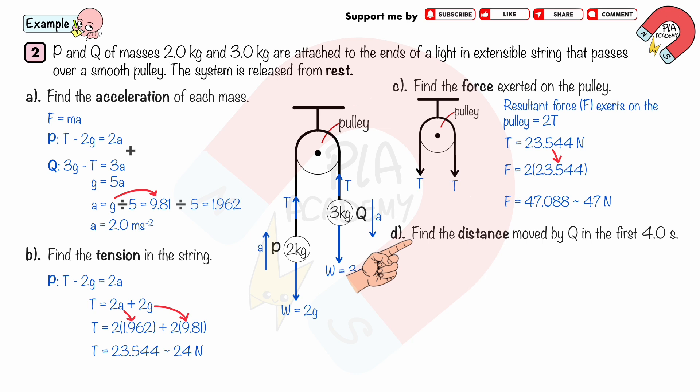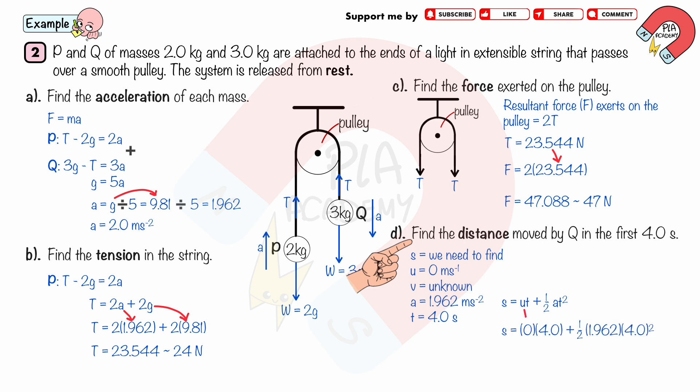Part d: Find the distance moved by Q in the first 4 seconds. Using kinematic equations with constant acceleration, taking the positive direction as downward: initial velocity u = 0, acceleration a = 1.962 m/s², and time t = 4 s. Using s = ut + ½at², substituting u = 0, t = 4, and a = 1.962, we get distance s = 16 m (2 significant figures).